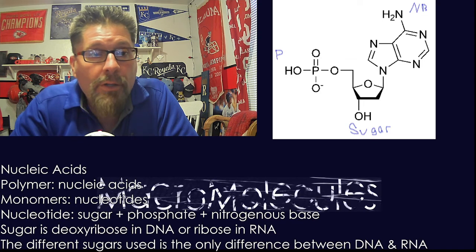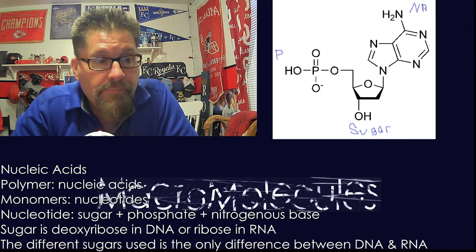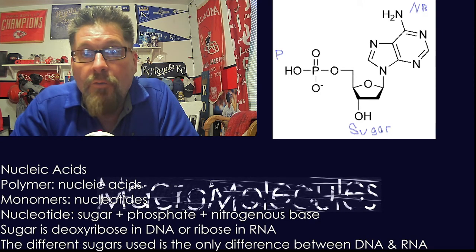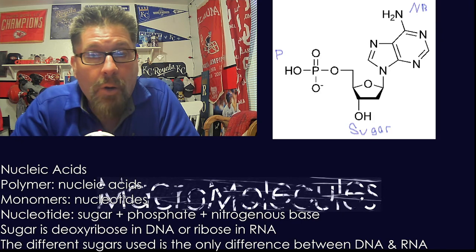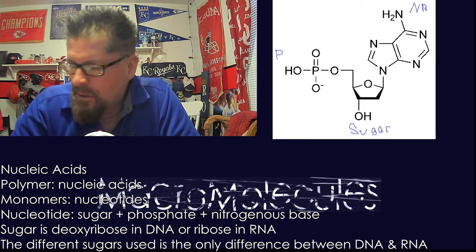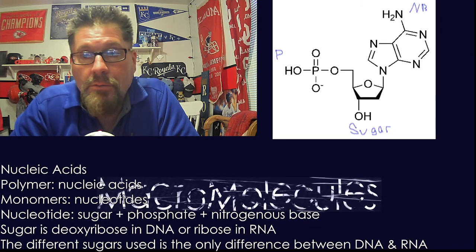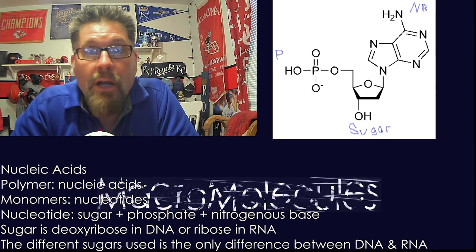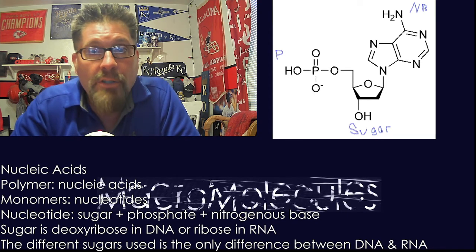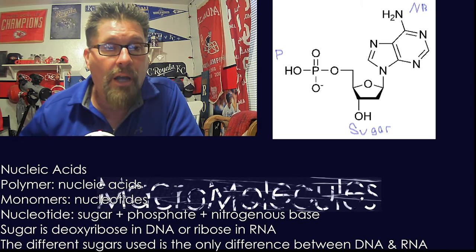One of the differences we'll point out specifically at the end of the RNA section is the sugars. For DNA, the sugar in the middle is deoxyribose — that has the -ose suffix indicating it's a sugar. For RNA, it's ribose. Depending on which sugar determines if it's DNA or RNA. Everything else is the same; you've got your variations in your nitrogen bases, but it's the sugar that determines if it's DNA or RNA.